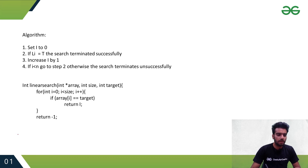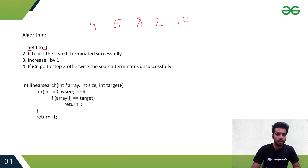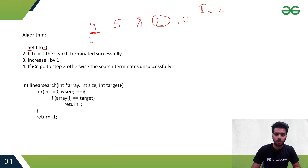Now let's see the algorithm for linear search. It says: set i to 0. We have an array — say 5, 8, 2, 10 — we set i to 0 because we start searching from the 0th element. Then we check if the element at index i, L[i], equals the target t. Let's say we have to search for 2, so we set the target element t equal to 2. We check if L[i] equals t: is 4 equal to 2? No, it is not. If it were the target element, the search terminates successfully. For example, if the target was 4, it would terminate successfully because we found it.